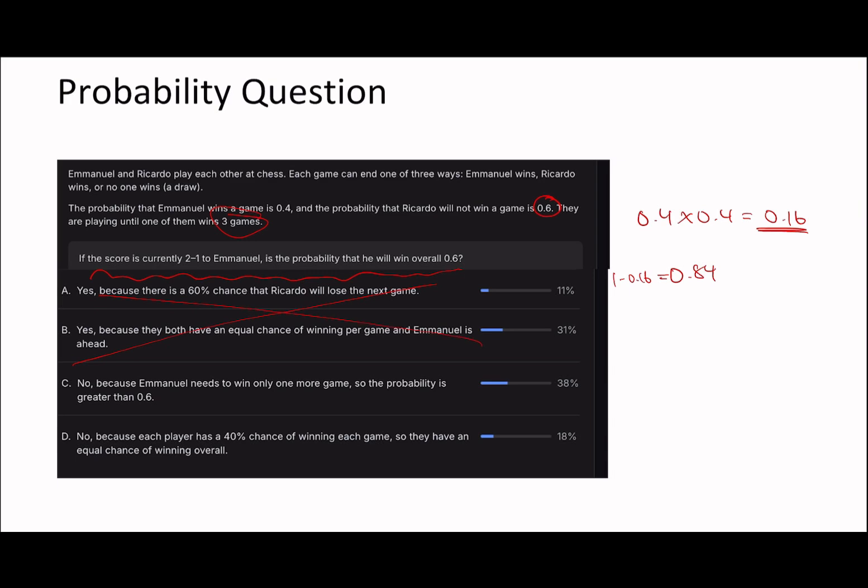So therefore, is the probability he will win overall 0.6? Well, the probability of Emanuel winning is going to be 0.84, because it's 1 minus 0.16. So it's not going to be 0.6. And out of these, each player has a 40% chance of winning each game, so they have an equal chance of winning overall. That's wrong. So C has to be the answer. Yeah, Emanuel needs to only win one more game.